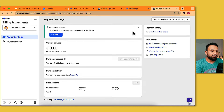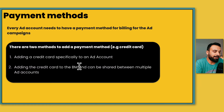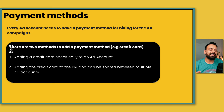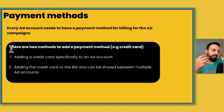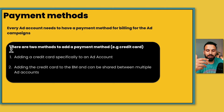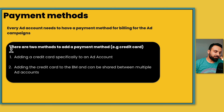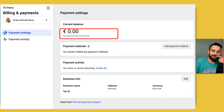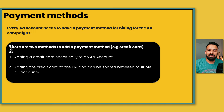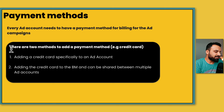Once your credit card is linked and you run campaigns, Facebook will start deducting from your payment method. With a new ad account, Facebook deducts small amounts at first — for example, every $10 spent. As you keep running campaigns, Facebook's trust increases and your billing threshold goes up, maybe to $100, then eventually $1,000 or more. This increases over time.